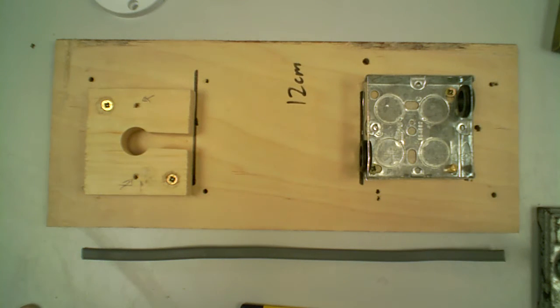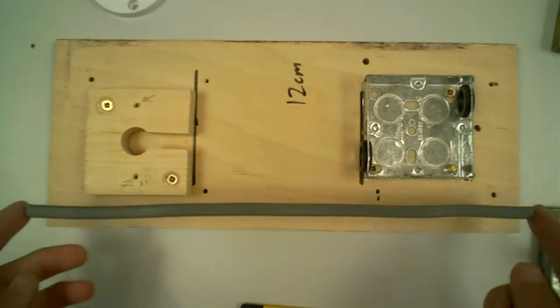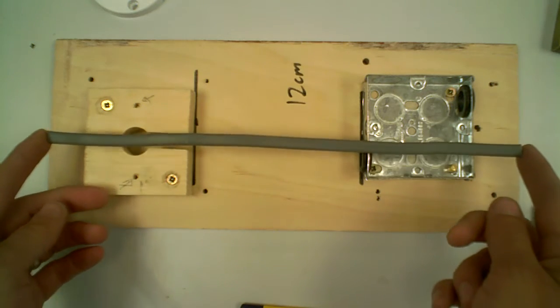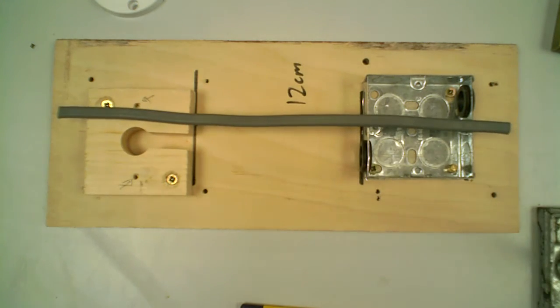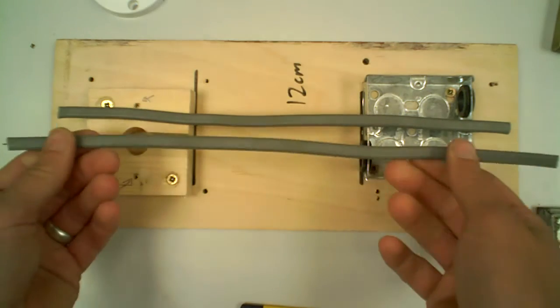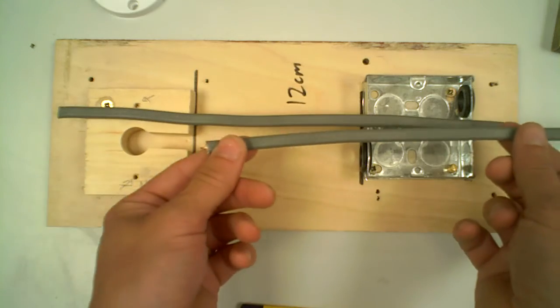Right, so the next stage what we're going to do is we're going to start threading up our cabling. For this you're going to want one 30 centimeter length of cabling and then you're going to want yourself a small length of cabling, possibly about 20 centimeters long. This again is slightly longer than it needs to be.